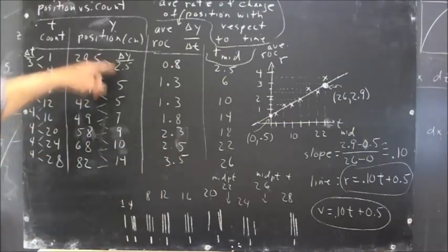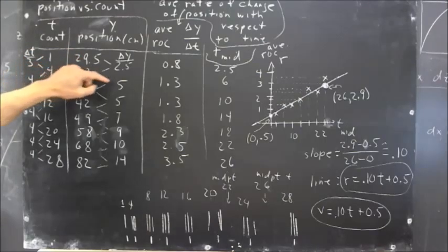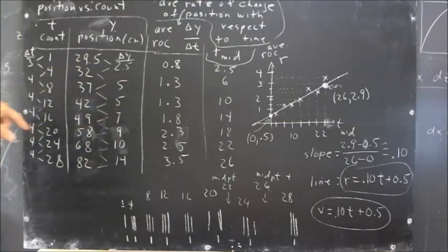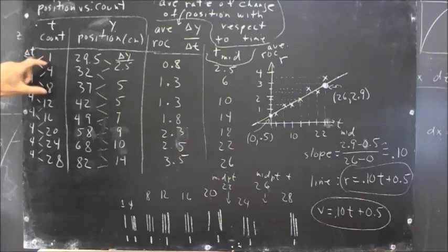The numbers I've got here are the changes in the Y coordinate from 20, say from 32 to 37, the change is 5, indicating a 5 centimeter difference in position. And between the corresponding clock times, 4 counts and 8 counts, 4 ticks and 8 ticks, if you like, there's a difference of 4 ticks.